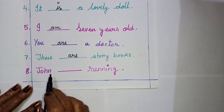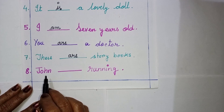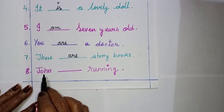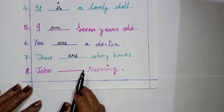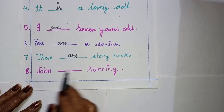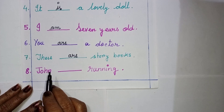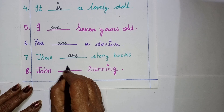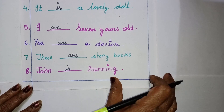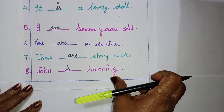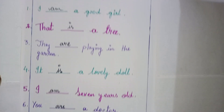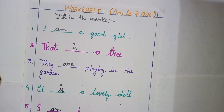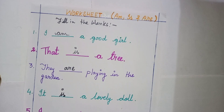Number eight: John dash running. So who is John? John is a boy, and he is one person — alone, one person. So John is running. I hope you have understood.